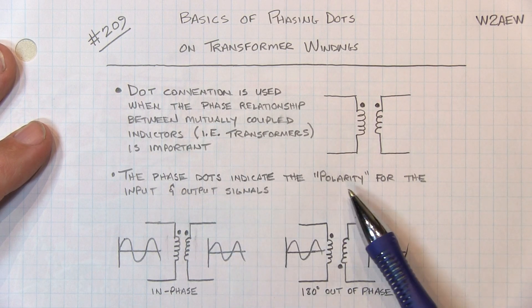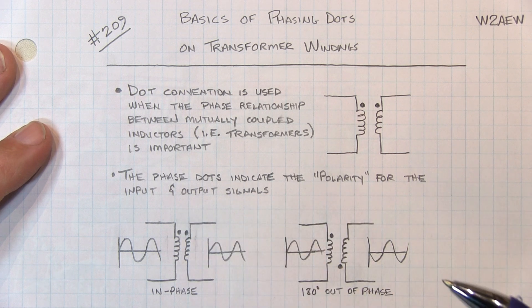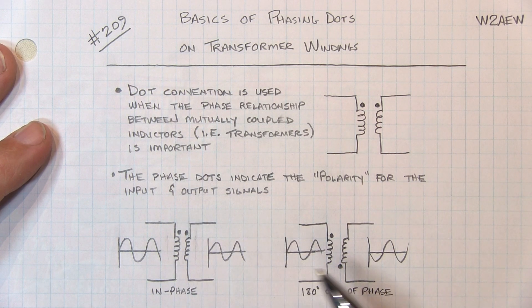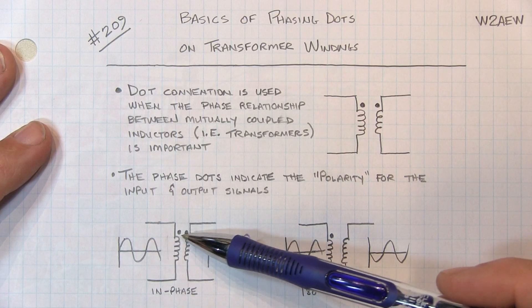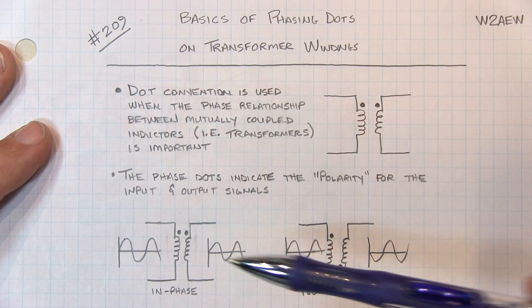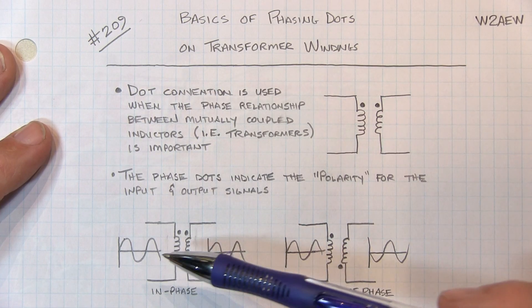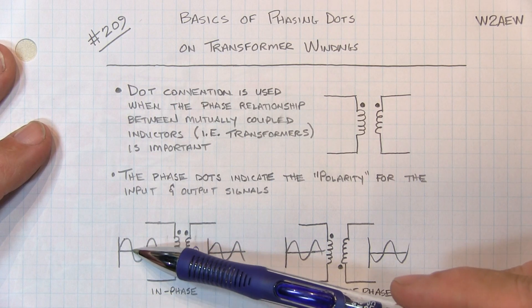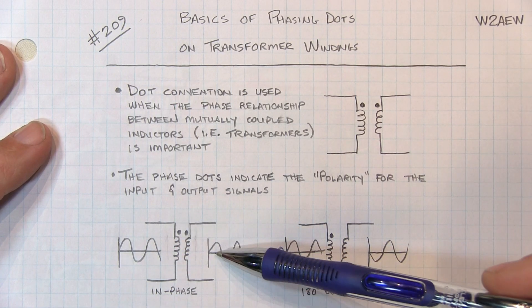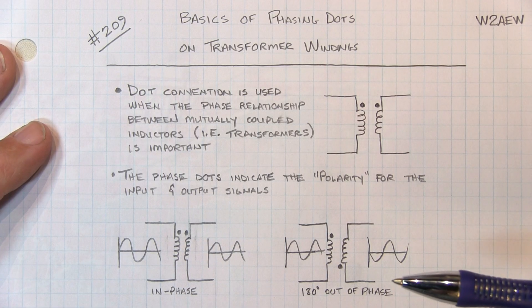The dots really indicate essentially the polarity for the input and output signals. Consider these two scenarios. If I have the phasing dots kind of lined up here, both on the top of the schematic, if we injected a signal that looks like this on this side, the output signal will follow it and will be in phase with it.